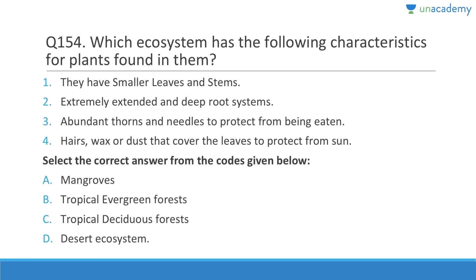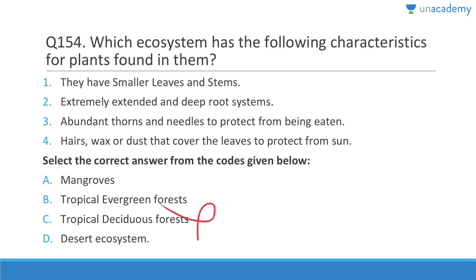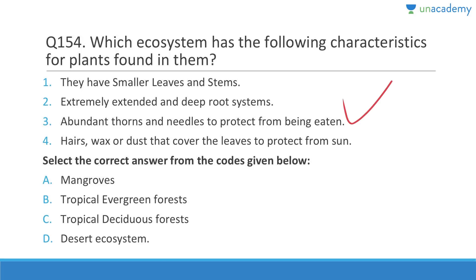Which ecosystem has smaller leaves and stems, extremely extended and deep root systems, abundant thorns and needles for protection, and a waxy coating to protect from transpiration losses? The answer is the desert ecosystem. Smaller leaf and stem size concentrates water; deep roots seek out moisture; tiny leaves reduce water loss while still allowing photosynthesis; thorns protect water-storing plants from animals.